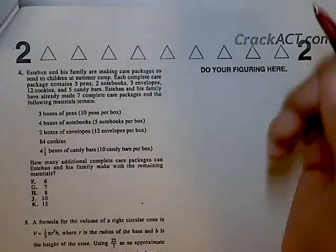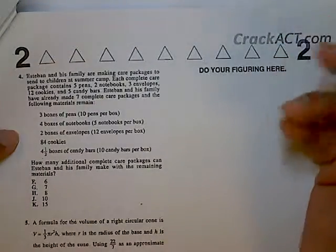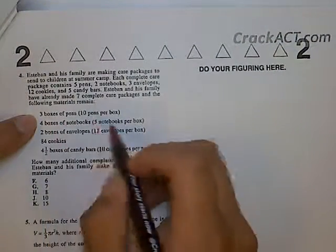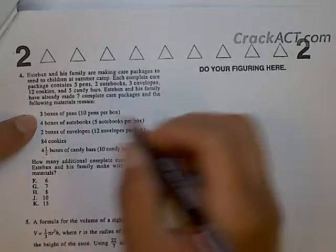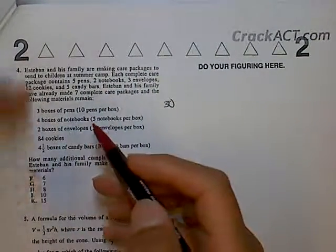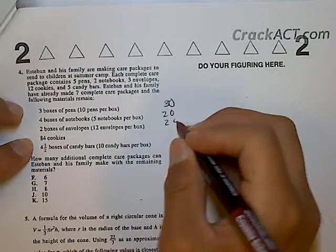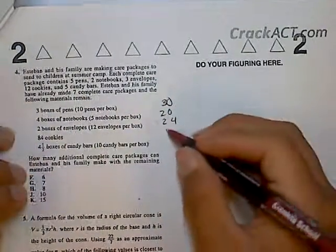Okay, so for number four, what you do is look at this information to figure out how much materials are left. If you have three boxes of pens and there's 10 pens per box, just do 3 times 10, which is 30. You do the same thing for every single row: 4 times 5 is 20, 2 times 12 is 24, and 84 cookies are left.